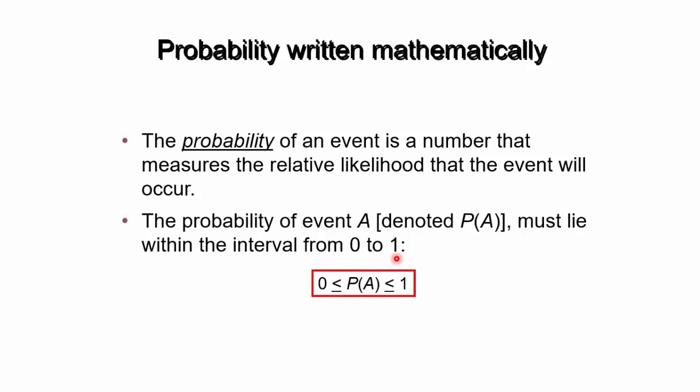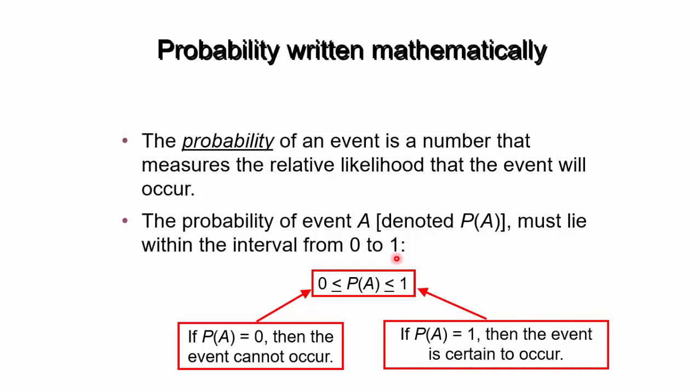So this is what we saw in the previous module: P(A) lies between 0 and 1. If P(A) is equal to 0, then the event cannot happen. If P(A) equals 1, then the event is certain to happen.